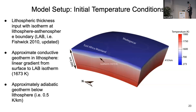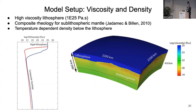This is a 3D representation of that initial temperature condition for Madagascar and surroundings, with red showing hotter temperatures and blue showing cooler temperatures. For the viscosity and density setup, we chose a rigid lid model — the lithosphere is high viscosity — with composite rheology for the sublithospheric mantle.